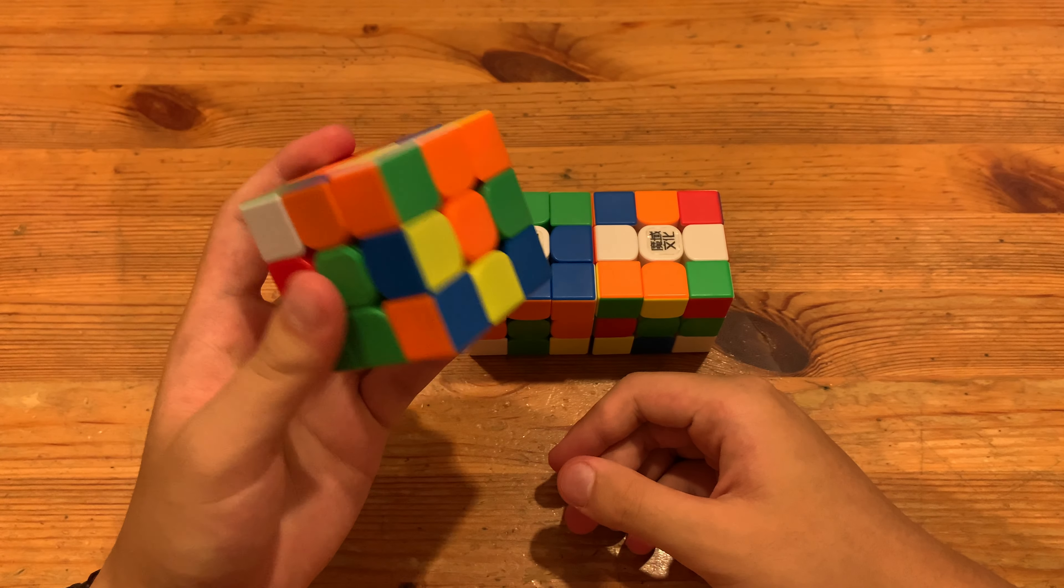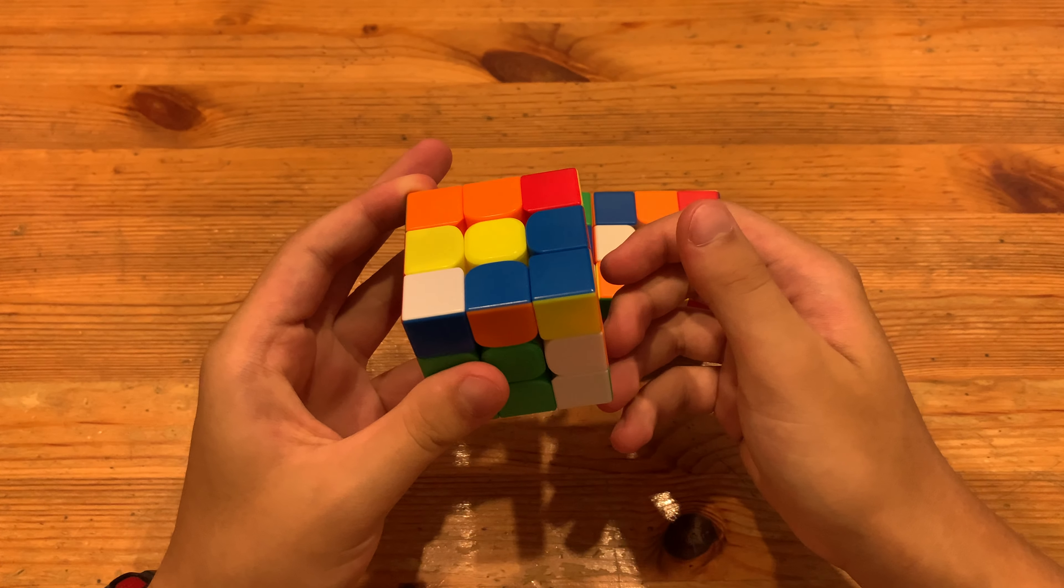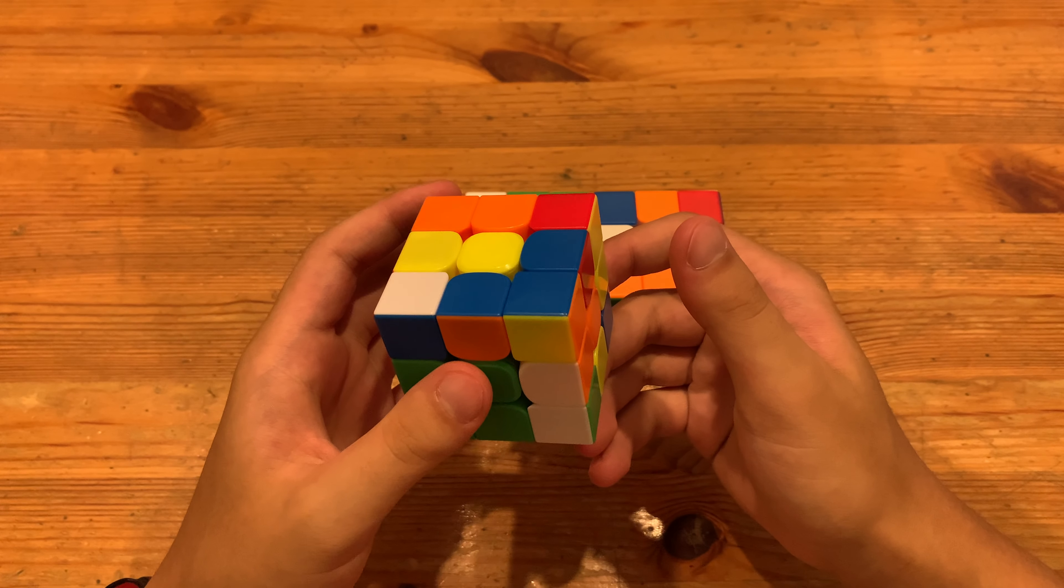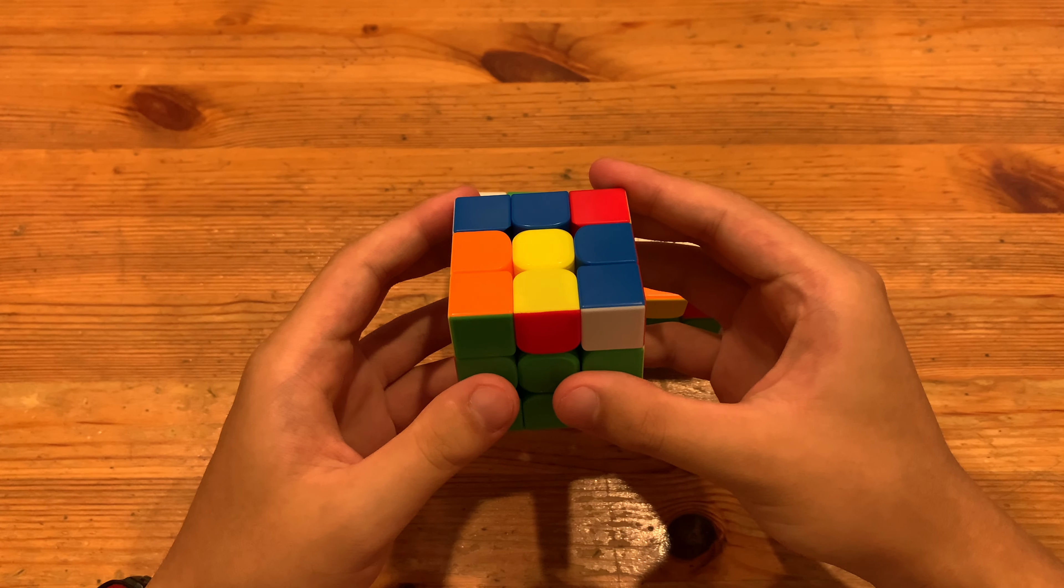But instead of only doing an R2, I'd probably just do like R' F U F' and then cancel into the back left pair like I planned. I'll probably just do that honestly. Not that efficient but it's not bad either.